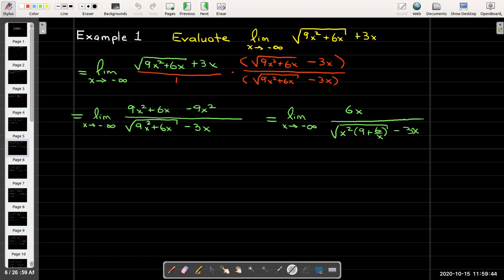Now remember here I'm calculating the limit as x approaches negative infinity. So if I were to take the radical of x² when x is negative I'm going to get the opposite of x or negative x.